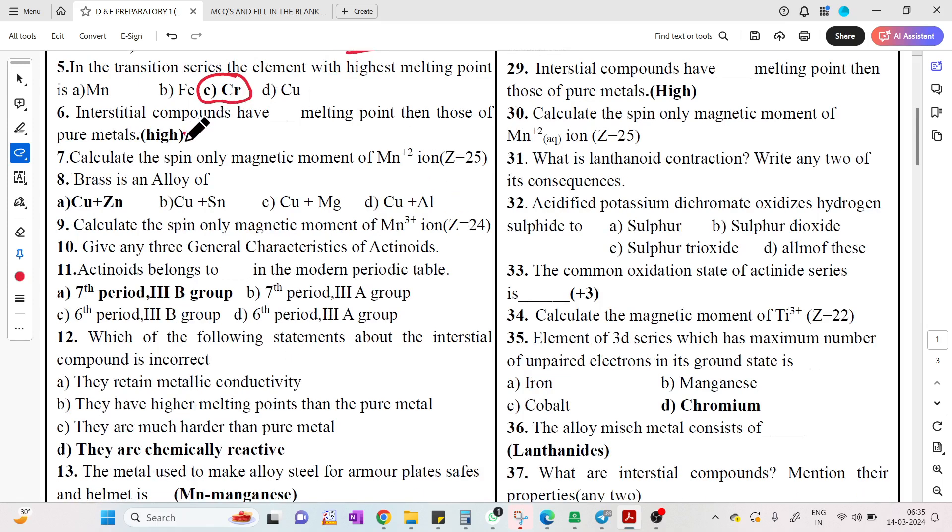Interstitial compounds have high melting point. Spin only magnetic moment - this is a fixed question. Brass is an alloy of Cu plus zinc. Again, spin only magnetic moment of Mn3+ where N equals 4.